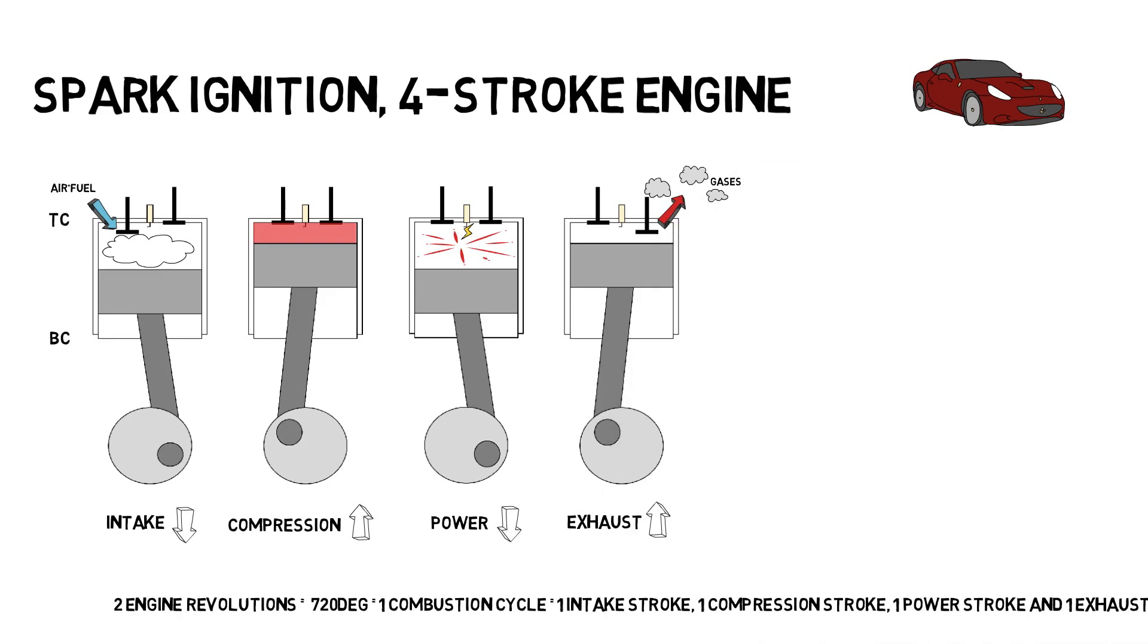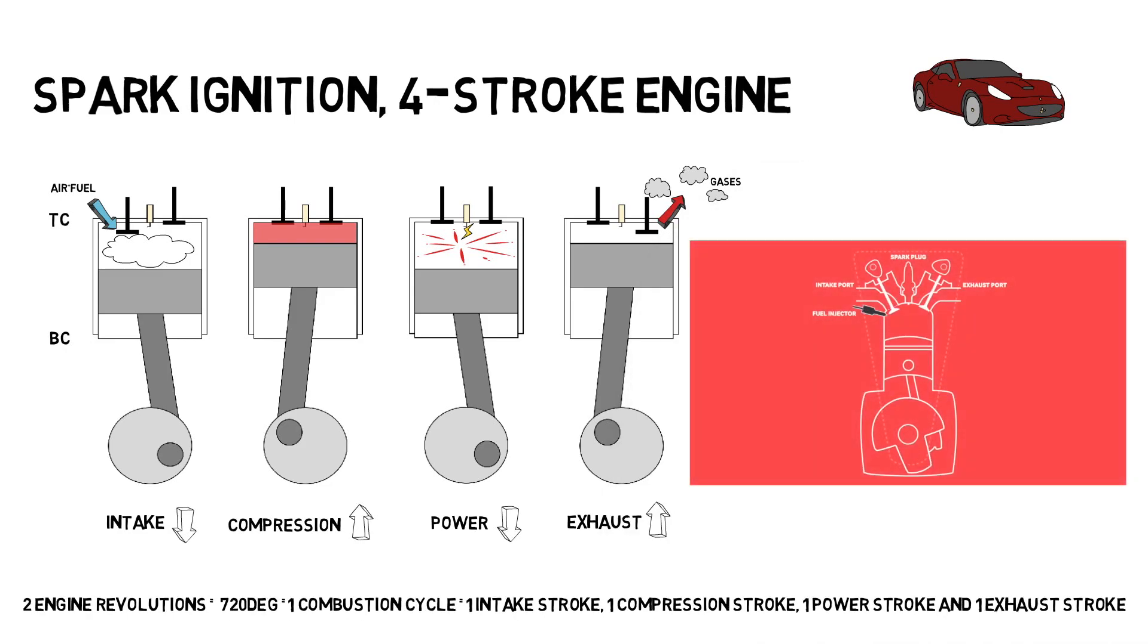To recap, two engine revolutions, which translate to 720 degrees, equals one cycle. This includes one intake stroke, one compression stroke, one power stroke, and one exhaust stroke.